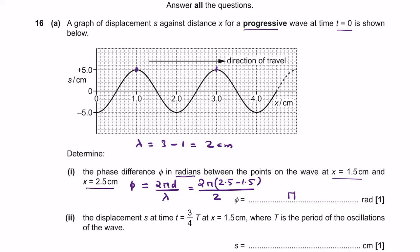For the second part, it asks for the displacement S at time t equals three-quarters of the time period at X equals 1.5 centimetres. You have to be very careful because this is a progressive wave, not a stationary wave. For a progressive wave, the amplitude remains the same throughout. At three-quarters of the time period, the wave is oscillating downwards, so the displacement is minus 5 centimetres. Don't say zero — the amplitude remains constant for a progressive wave.